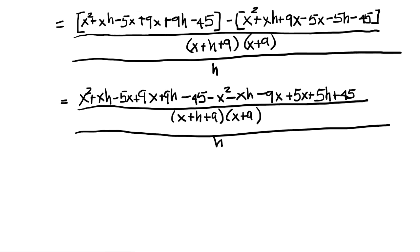Let me get a different color pen. What I want to do is look for anything that might add up to give me 0. So I've got x squared and minus x squared. That's going to add up to 0. I've got plus xh and minus xh. When I add that up, it's going to be 0.